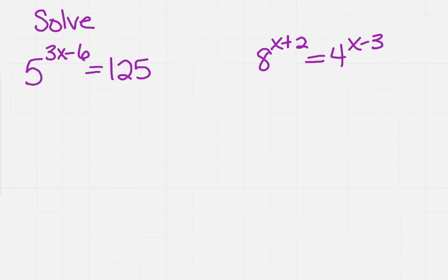We want to solve these logarithmic equations. The easiest way to do this is if they both have the same base. Remember, the base is the big number and the little number is the exponent. So we want to get 5^(3x-6) equals 125 so they each have 5 as a base.